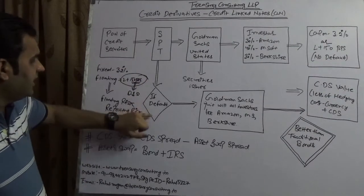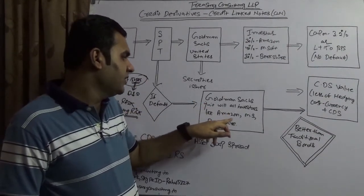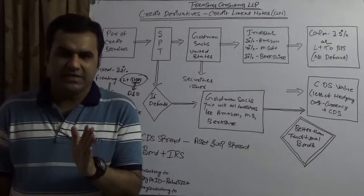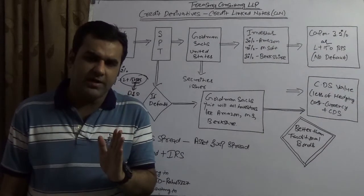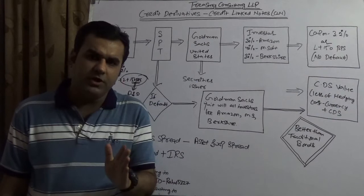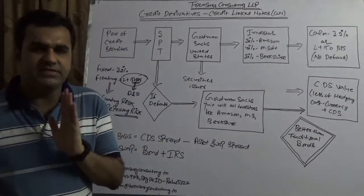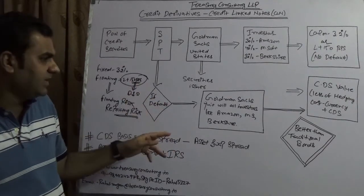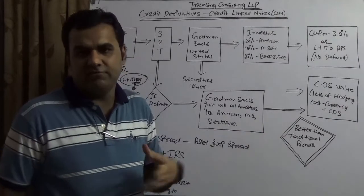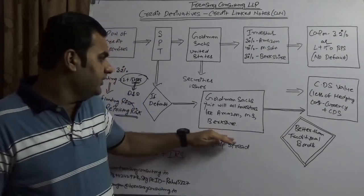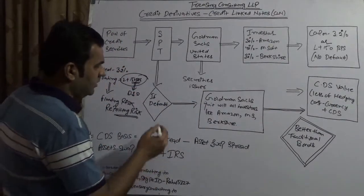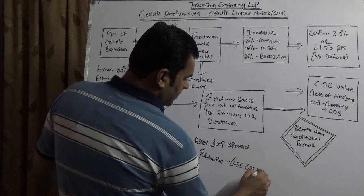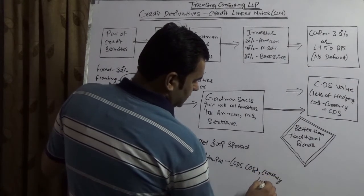If there is a default, Goldman Sachs will exit and all investors — Amazon, Microsoft, and Berkshire — will also exit. One very important thing to understand in credit linked notes is that in the case of any exit due to default, it is quite certain that you will not only lose the coupon but also lose the entire principal. Before deciding the appropriate payout, Goldman Sachs would consider: total principal minus CDS cost, minus currency cost.